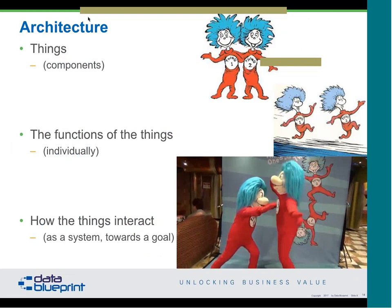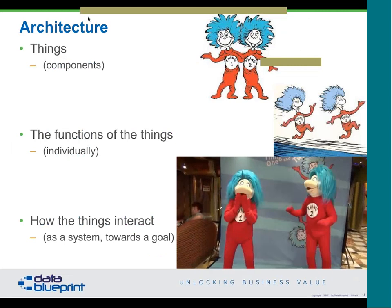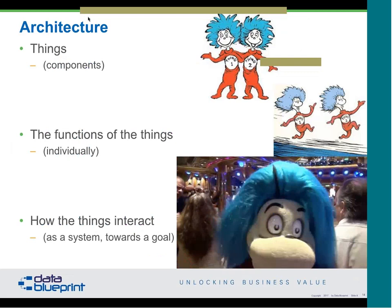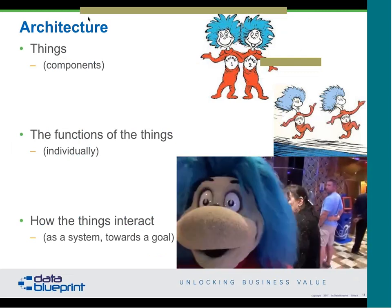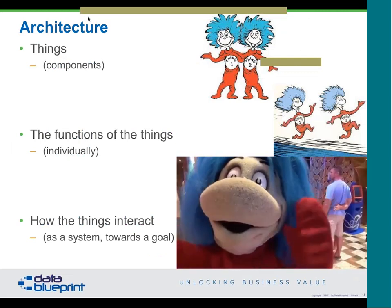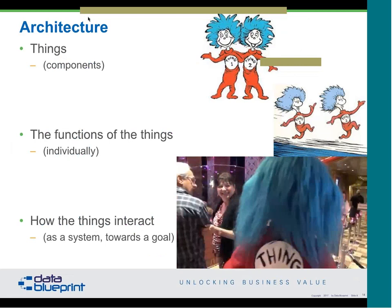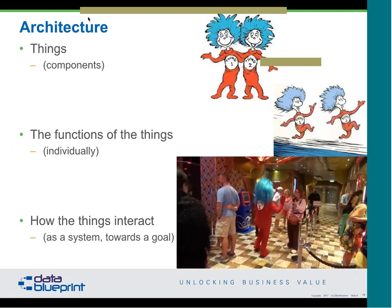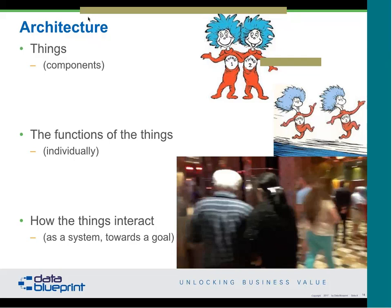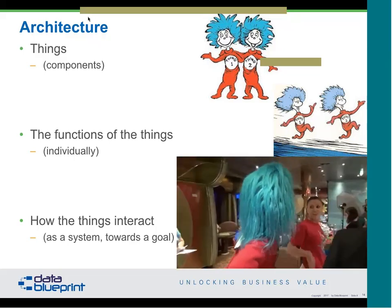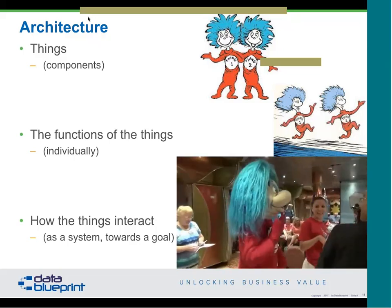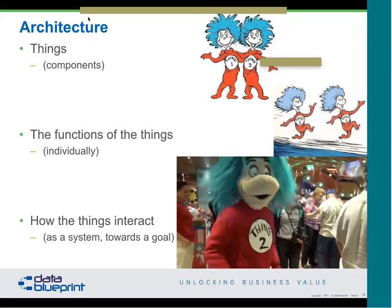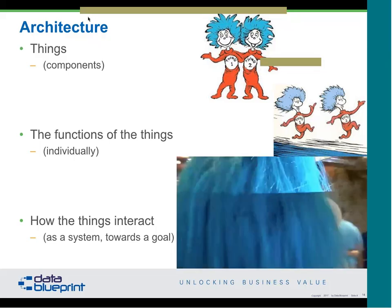If somebody asks why they need to understand architecture, ask them: do you want to understand the things that make up this architecture — whether it's an organization, a building, or a car? Yes, cars have architectures. Do you understand the functions of those things, and how they interact? Because if you don't understand all three, it's virtually impossible to make any of it better.